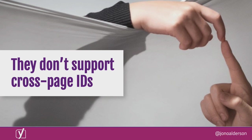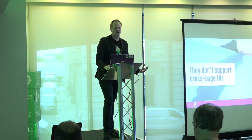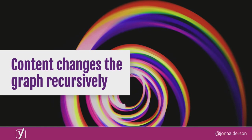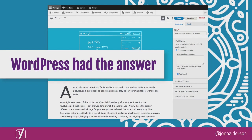Google also doesn't support cross-page IDs. If I have an article and a product both run by the same organization, I have to build the entire graph on every single page — defining the author, the company, the web page, the website, the organization, the product — in every single instance. And when content within the graph changes, it needs to recursively update everything else, otherwise it all goes wrong.